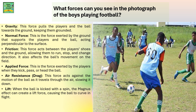Friction: This force acts between the players' shoes and the ground, allowing them to run, stop, and change direction. It also affects the ball's movement on the field. So if there was no friction, they would slip and fall. Applied Force: This is the force exerted by the players when they kick, pass, or head the ball. It means the players are an external means applying the force on the ball — the object.